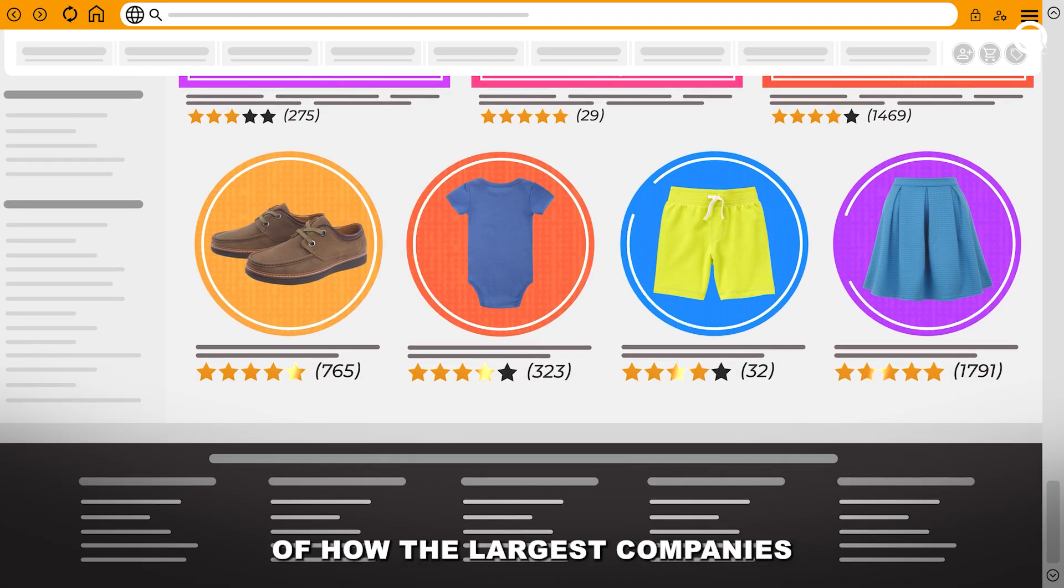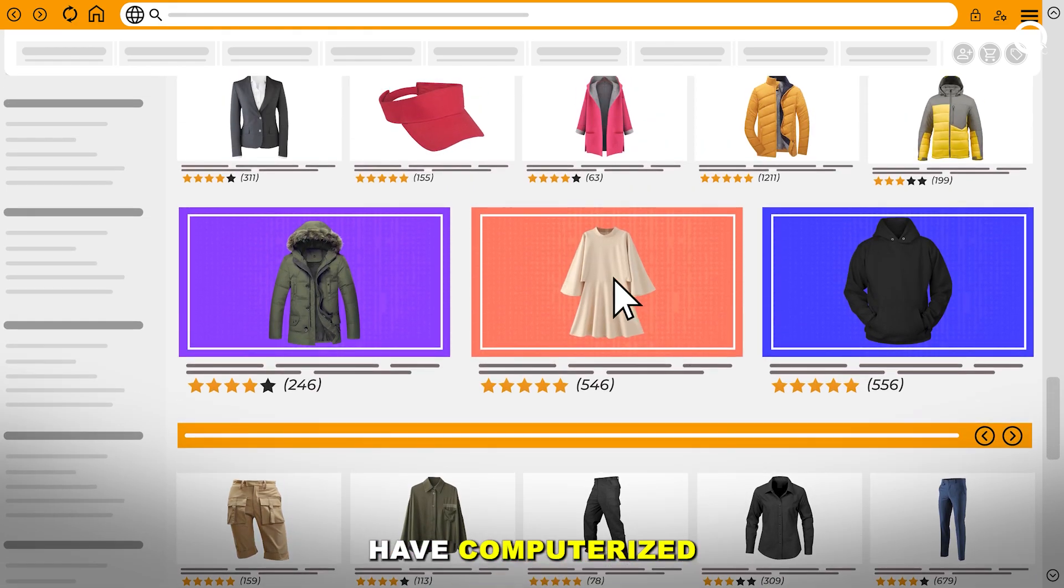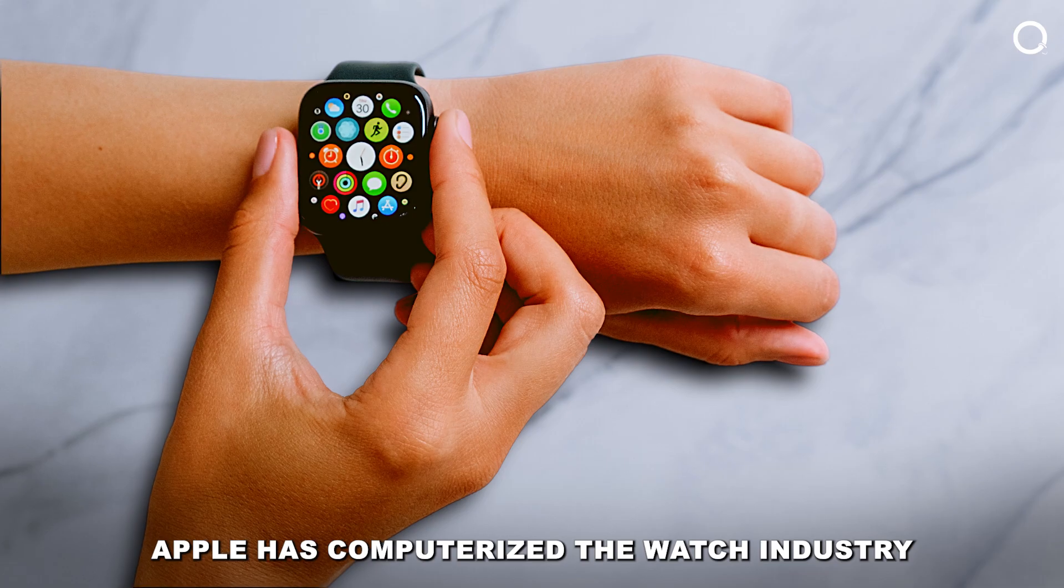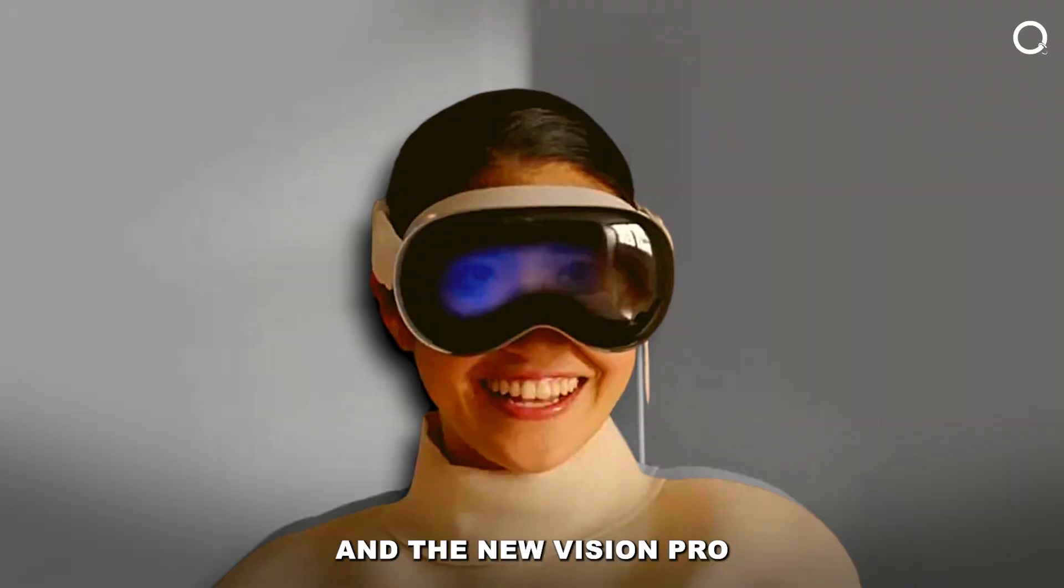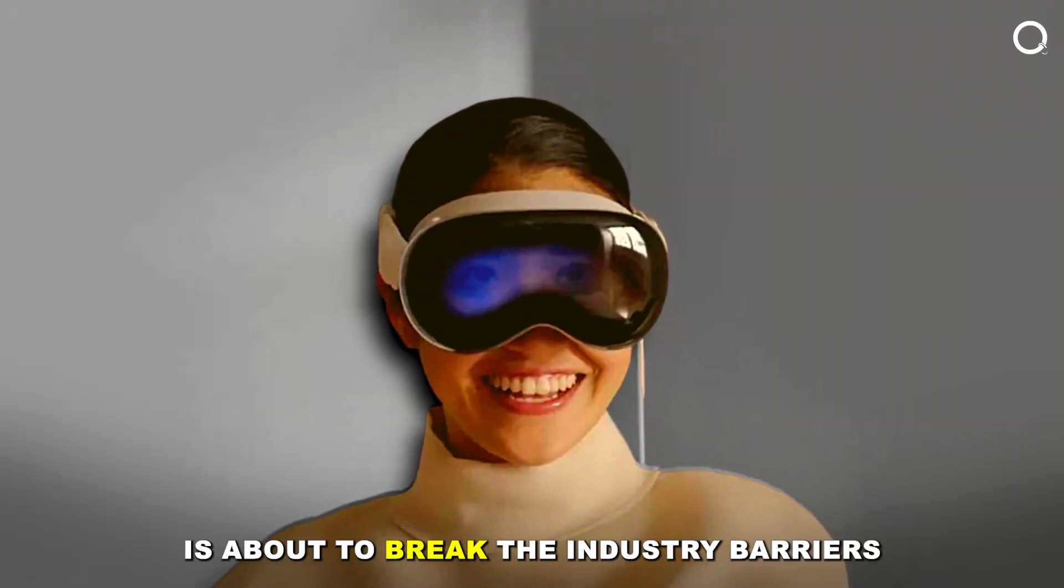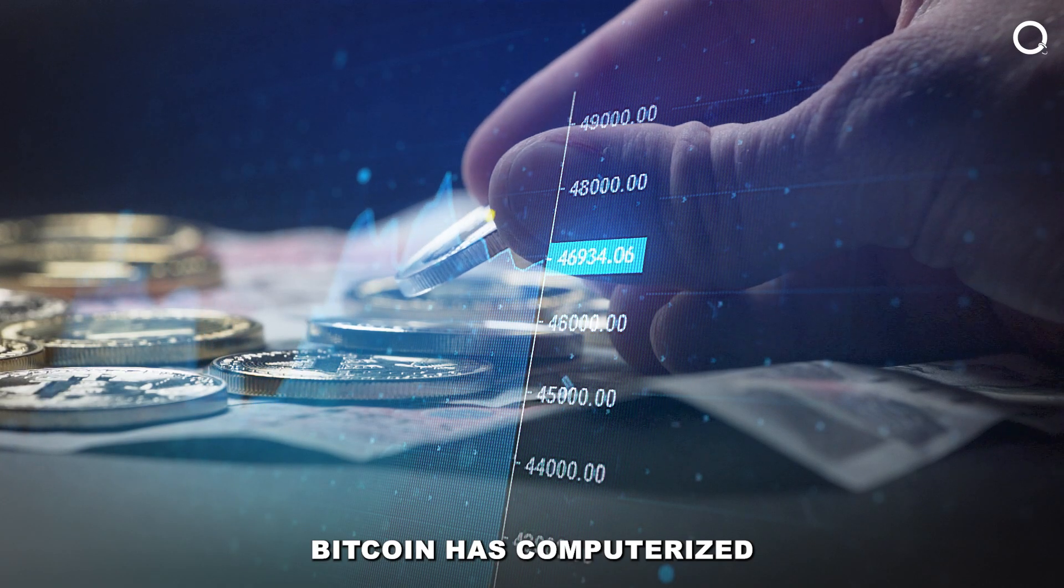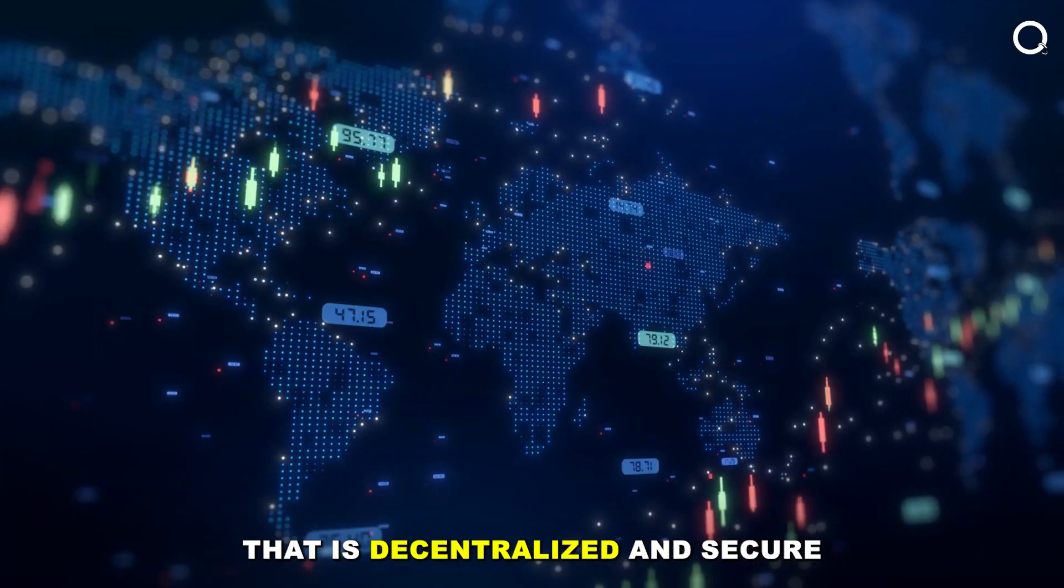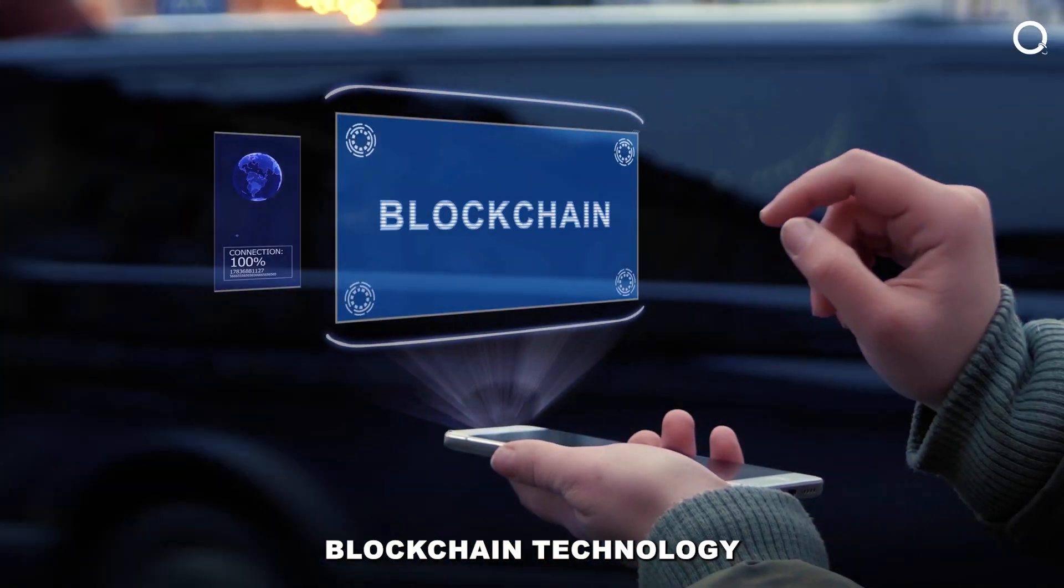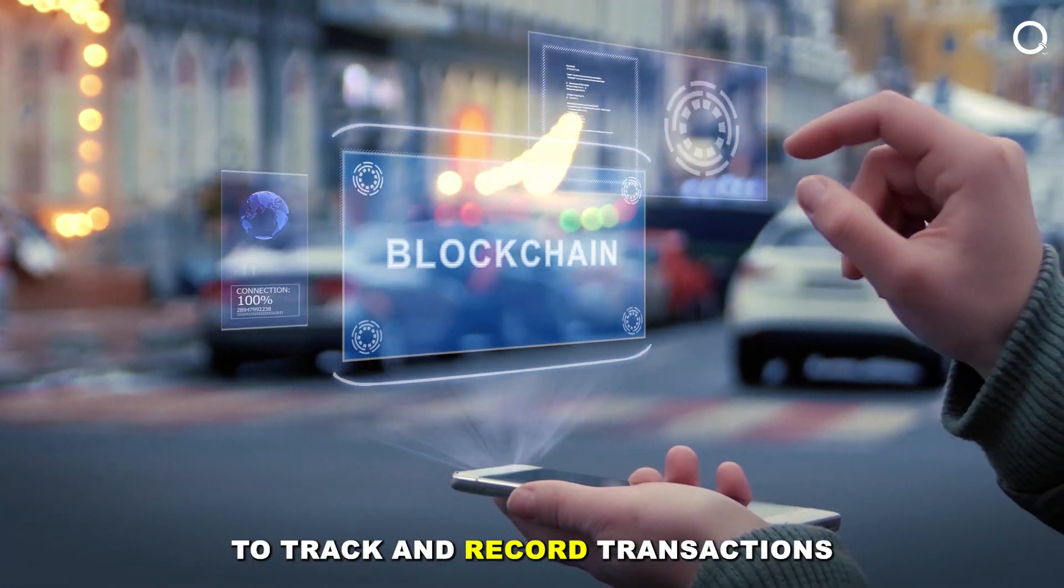Here are more specific examples of how the largest companies have computerized their respective industries. Apple has computerized the watch industry by developing the Apple Watch, and the new Vision Pro is about to break the industry barriers. Bitcoin has computerized the money industry by developing a new cryptocurrency that is decentralized and secure. Bitcoin also uses blockchain technology to track and record transactions.